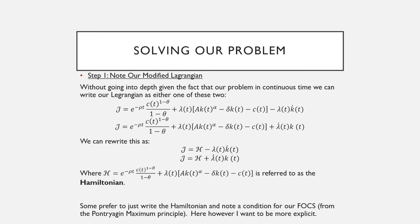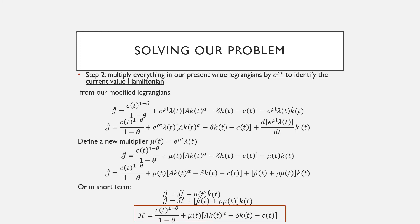Or it could be one of these two alternatives: j is equal to H plus λ-dot(t) times k(t), where this H term is referred to as our Hamiltonian. Sometimes we just write our Hamiltonian and skip straight to the first order conditions. However, here I want to be explicit because I want to know what changes in our first order conditions once we take them. So step two is that we're going to multiply everything in our present value Lagrangian by e raised to the power of ρt in order to identify our current value Hamiltonian.